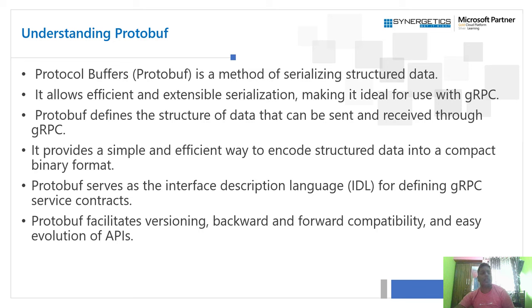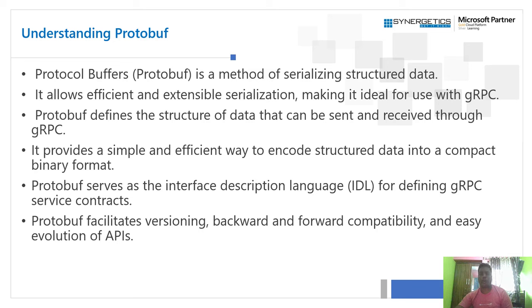Protobuf provides a simple and efficient way to encode structured data into a compact binary format, which is why gRPC is so performant. The protobuf serves as an interface description language for defining gRPC service contracts, where we define method names, return types, and other details. Protobuf also facilitates versioning, backward and forward compatibility, and easy evolution of APIs, making it ideal for building high-performance APIs.